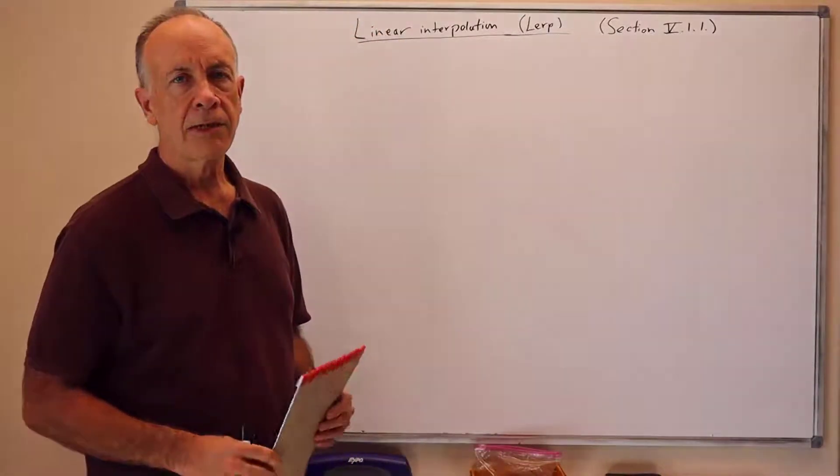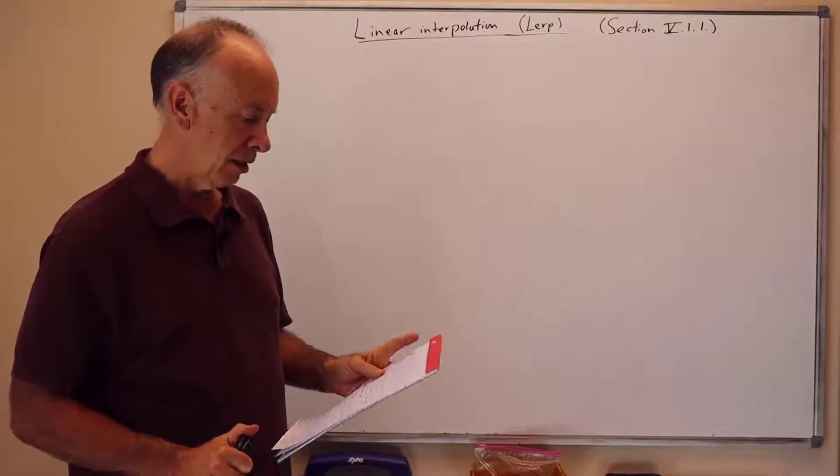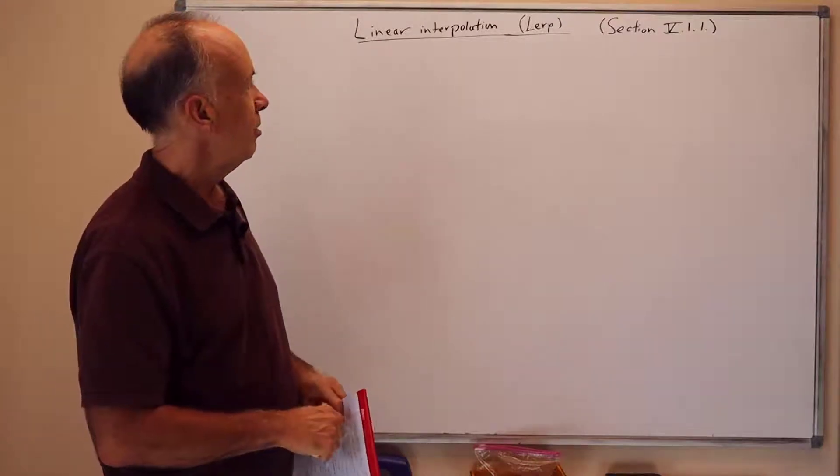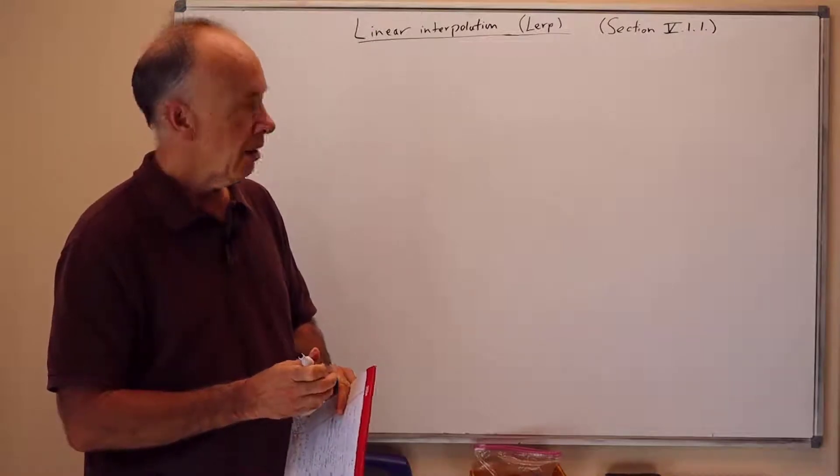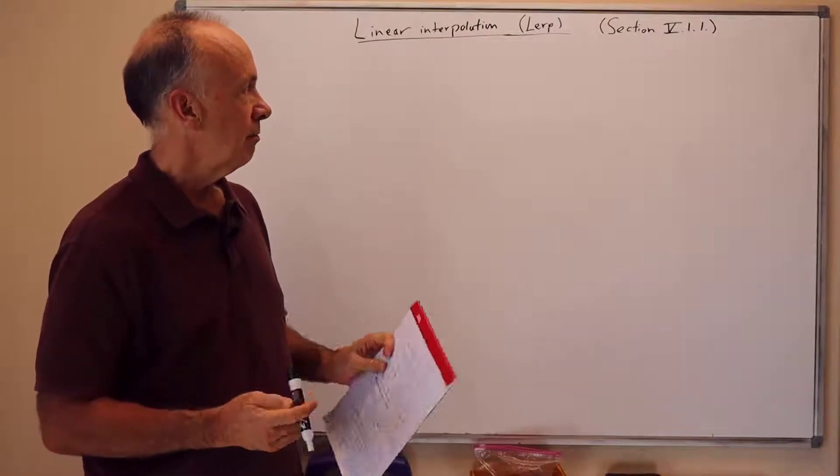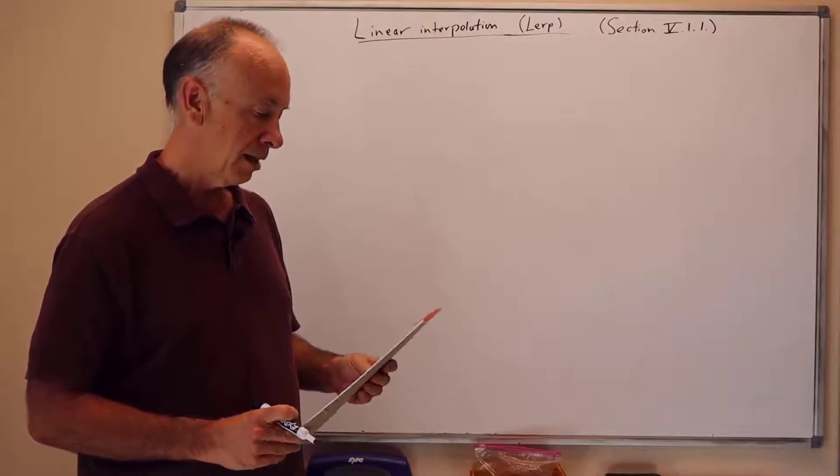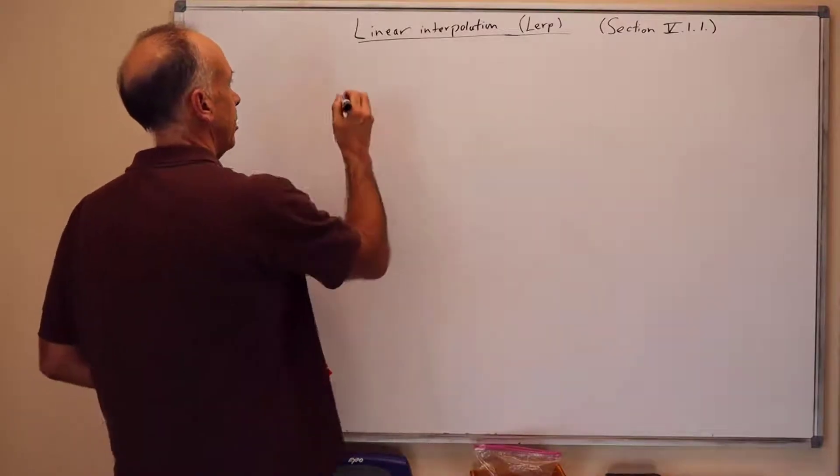Hi, this is the first of a series of presentations on interpolation. We'll start with linear interpolation, known as LERPing for short, as one of the simplest examples. It's taken from section 5.1.1 in the textbook.